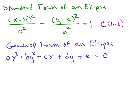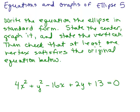First of all, remember what the standard form of an ellipse looks like. We have X minus H squared over A squared and Y minus K squared over B squared equals 1, where HK is the center. In the general form, it just looks like a polynomial equal to 0.